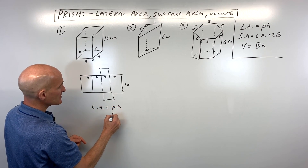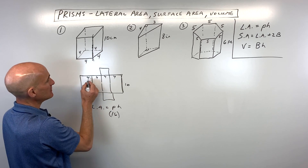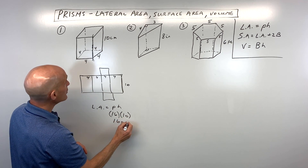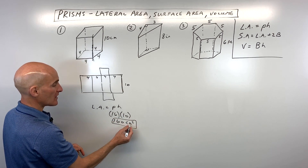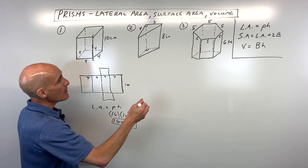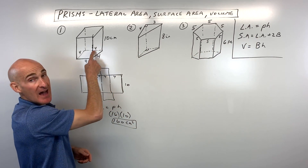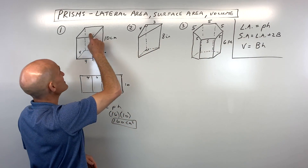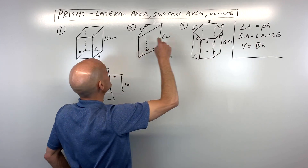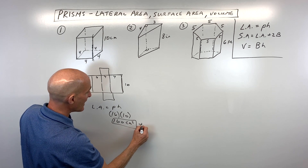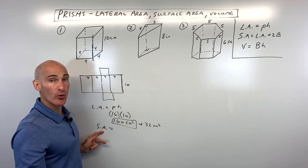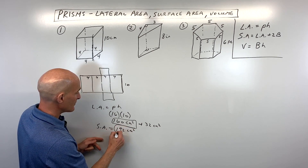Lateral area equals perimeter of the base times the height. The perimeter is 16 and the height — the distance between the two squares — is 10. That gives us a lateral area of 160 centimeters squared. With area, you want units squared; volume is units cubed. For surface area, we take the lateral area and add the two bases. The bottom is a square: 4 times 4 is 16, times 2 is 32. So our surface area, or total area, is 192 centimeters squared.